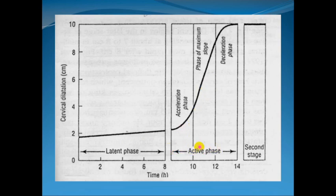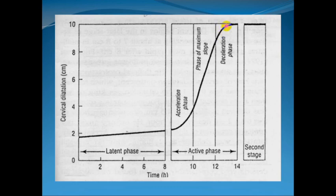The active phase of the first stage of labor is subdivided into three phases: the acceleration phase with rapid increase in cervical dilatation, the phase of maximum slope with the most rapid dilatation against time, and the deceleration phase with a plateau or slowing in the rate of cervical dilatation until the patient reaches full dilatation of 10 cm, ending the first stage of labor.